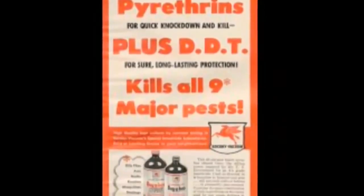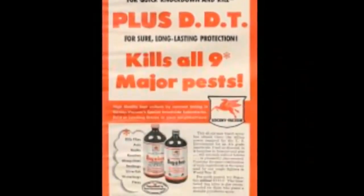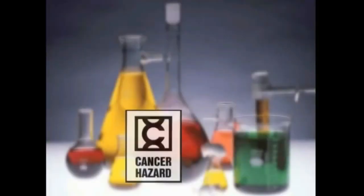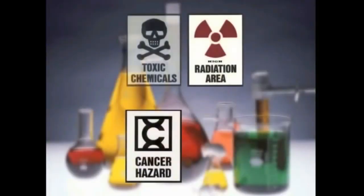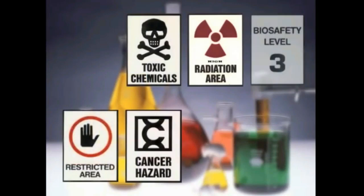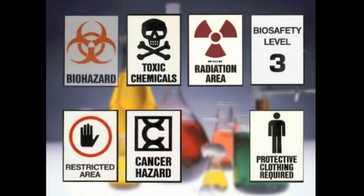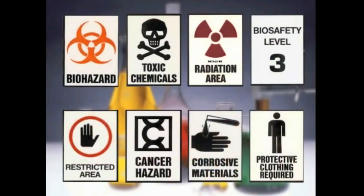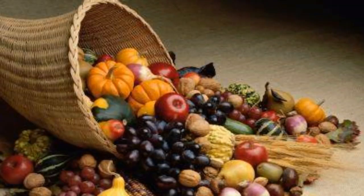The Food and Agriculture Organization defines pesticides as follows: any substance or mixture of substances intended for preventing, destroying, or controlling any pest, including vectors of human or animal disease and unwanted species of plants or animals. Whether or not you like the sound of that, there's no denying that pesticides have been enormously beneficial to mankind.